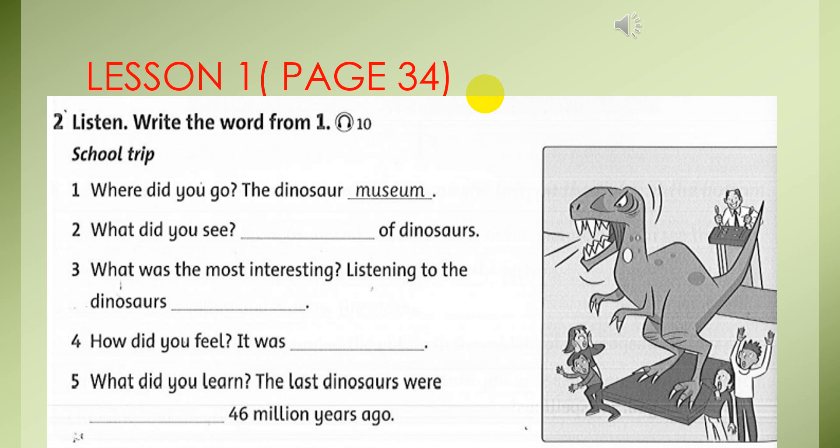Okay. Have you finished yet? Number 1 already, museum. How about number 2? Models, models of dinosaurs. Number 3, what is it? It's a roar. Listening to the dinosaurs roar. How about number 4? How did you feel? It was scary. And number 5, what did you learn? The last dinosaur was alive 46 million years ago. Number 2, models. Number 3, roar. Number 4, scary. And number 5, alive. And now you correct your mistake in your workbook, please.